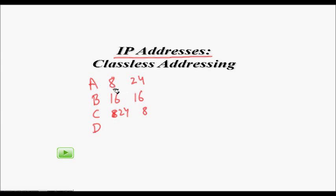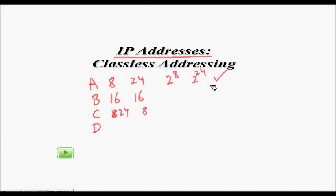The problem with classful addressing was that in class A there were very few networks — just 2 to the power of 8, which is 256. Each class A network has 2 to the power of 24 hosts, which is too much for any organization, however big it may be. So a lot of IP addresses, which are a very costly resource, are wasted.